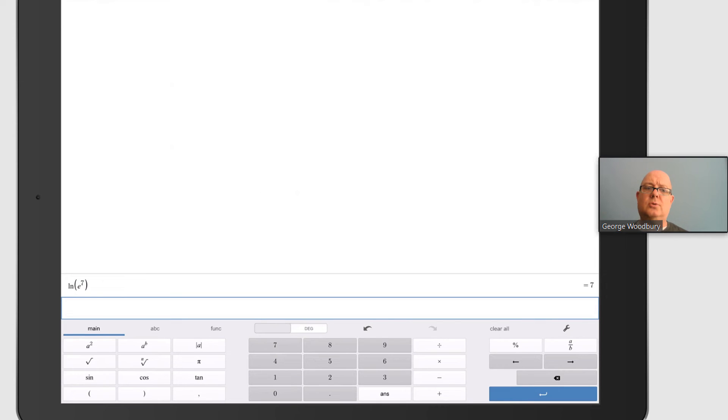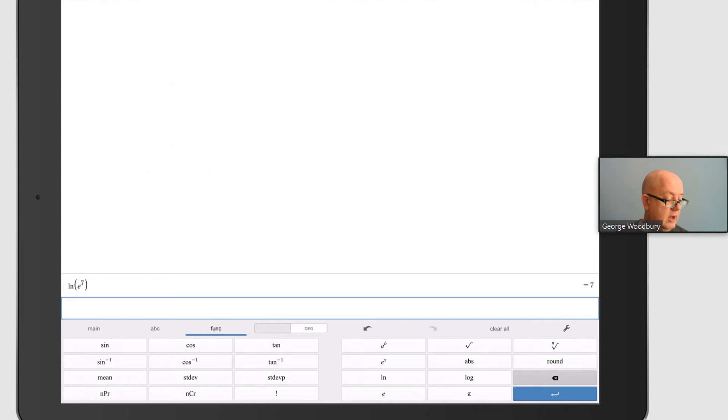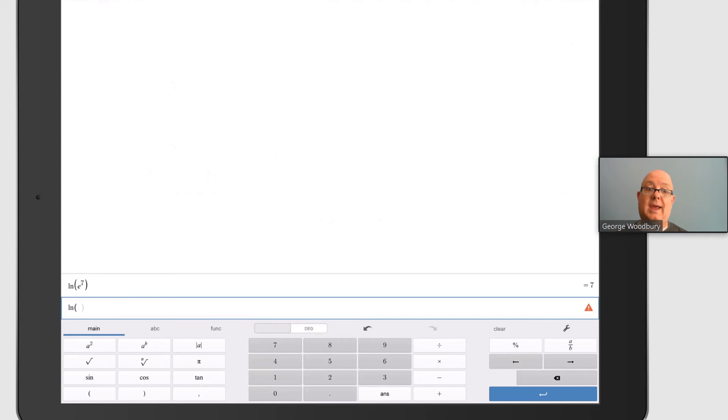The next one was the natural logarithm of 2,000. So back to function, ln, back to main, 2,000. Press enter, and to three decimal places, that's 7.600. The 9 is too far away to round it up.